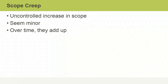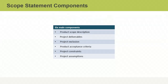By learning to recognize even the smallest variances from the original scope, you can address them and mitigate the risk that scope creep poses to a project. A Project Scope statement should have six main components. Together, these ensure everyone involved knows what falls within the project scope and form a basis for determining how to manage all remaining activities in the project's lifecycle.